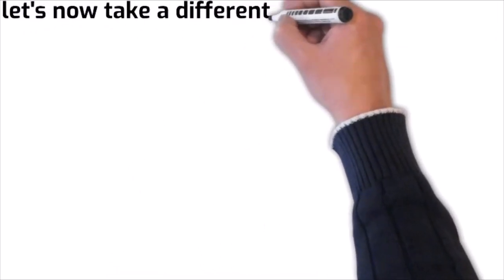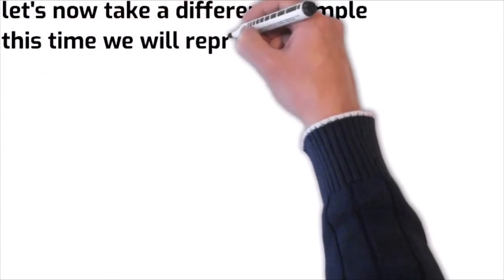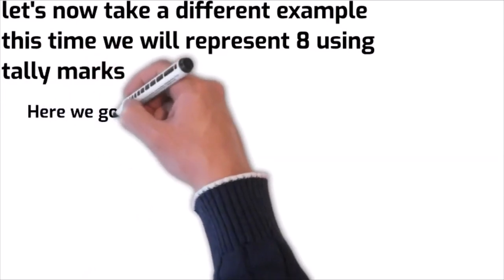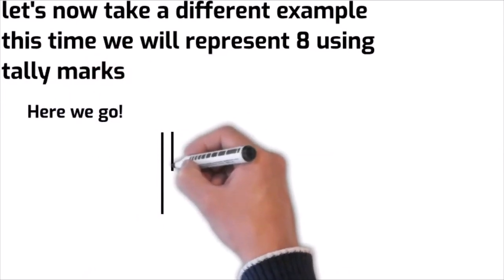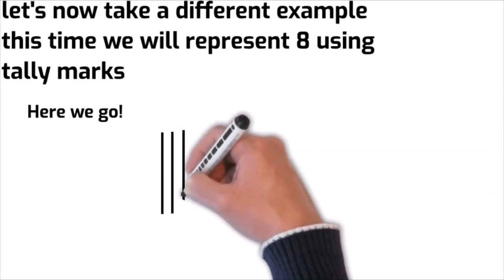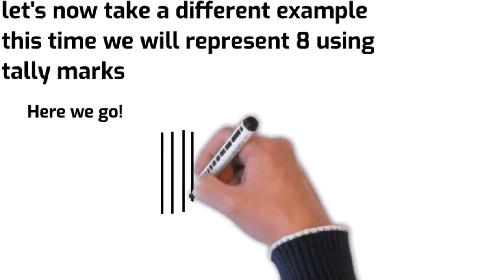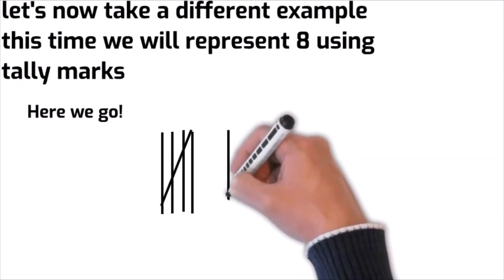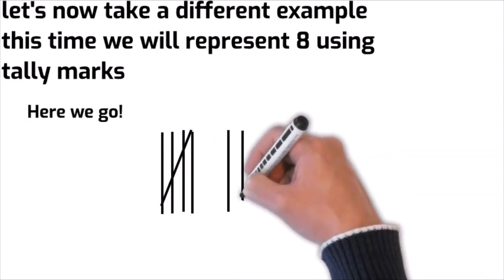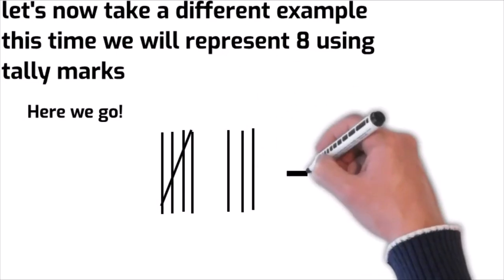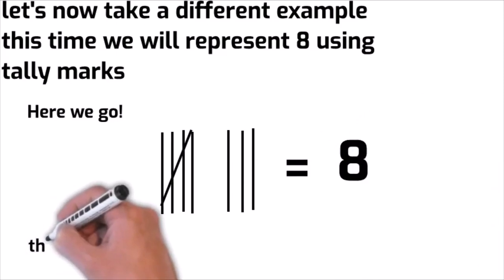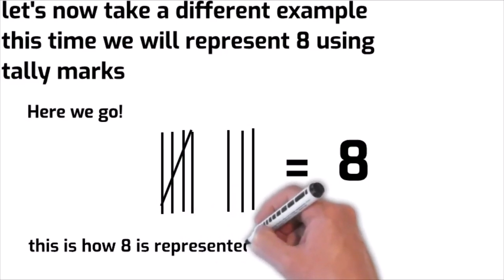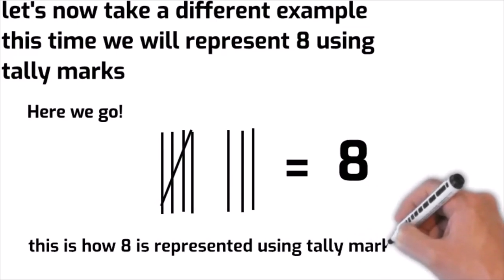Let's take a different example. This time we will represent it using tally marks. Here we go: one vertical line, two vertical lines, three vertical lines, four vertical lines and the diagonal line across those four lines making it five, six vertical lines, seven vertical lines, eight vertical lines. This is how it is represented using tally marks.